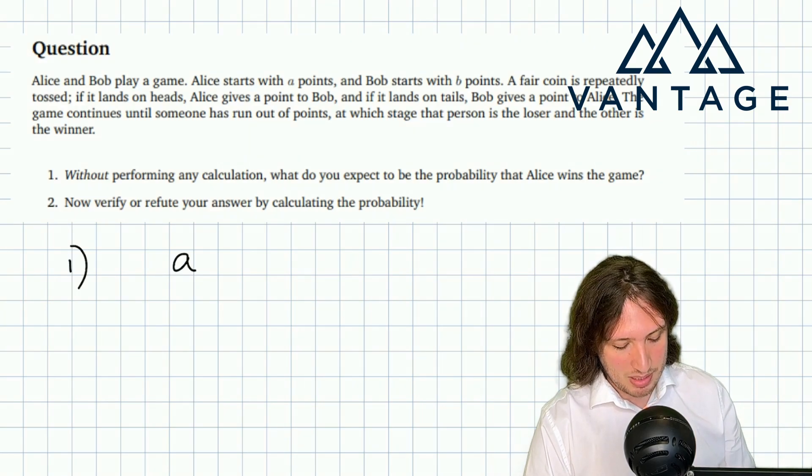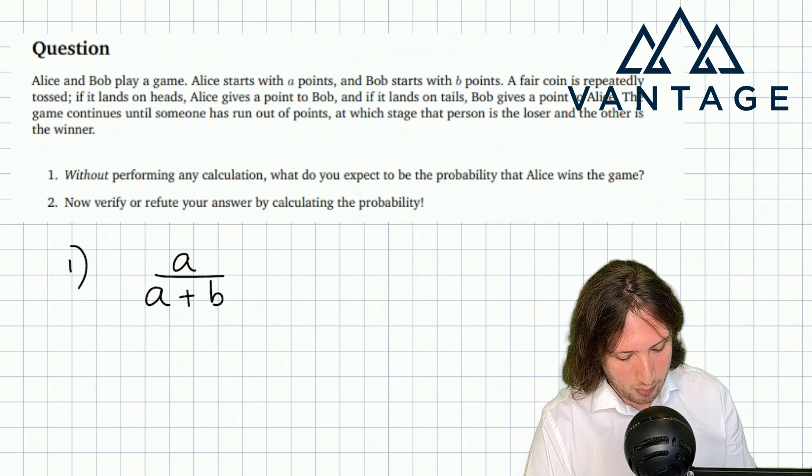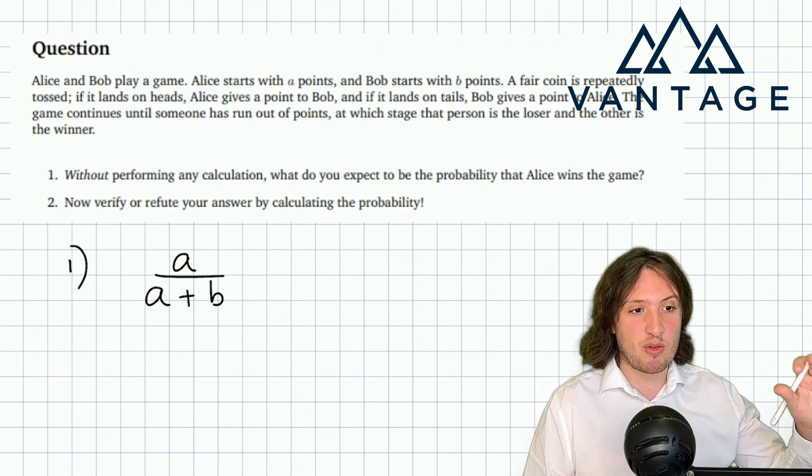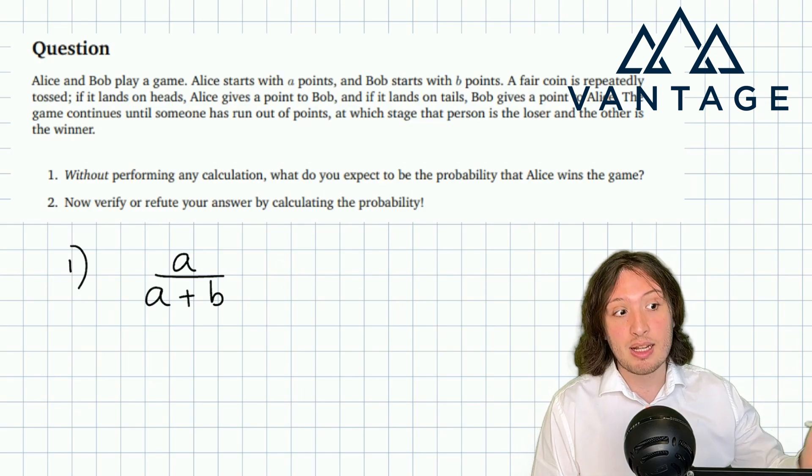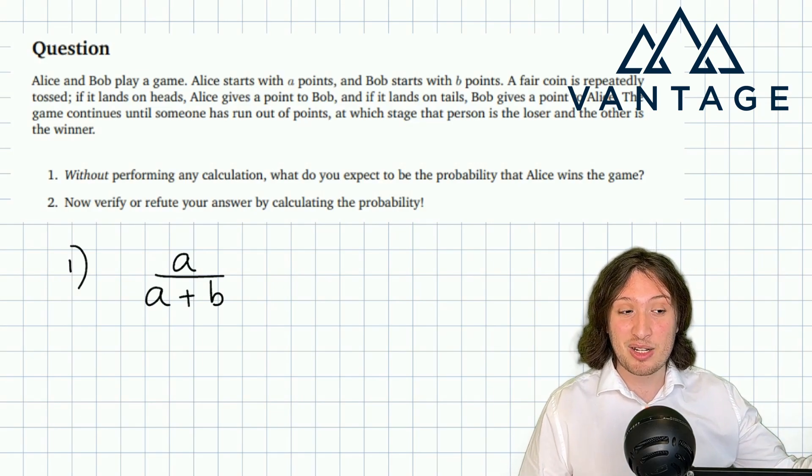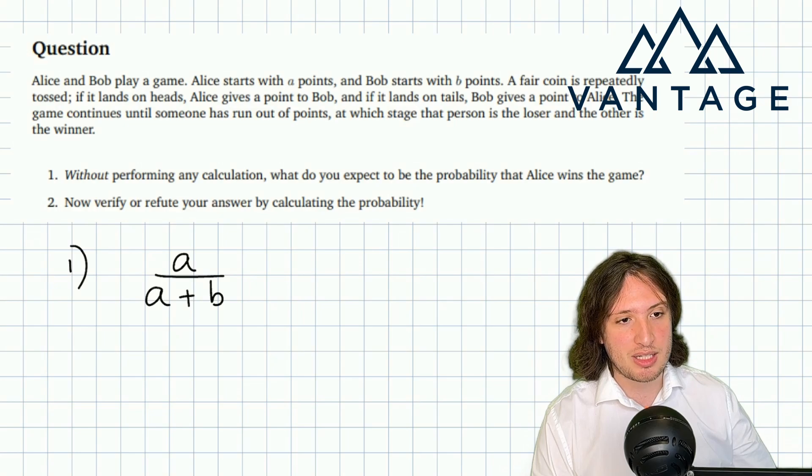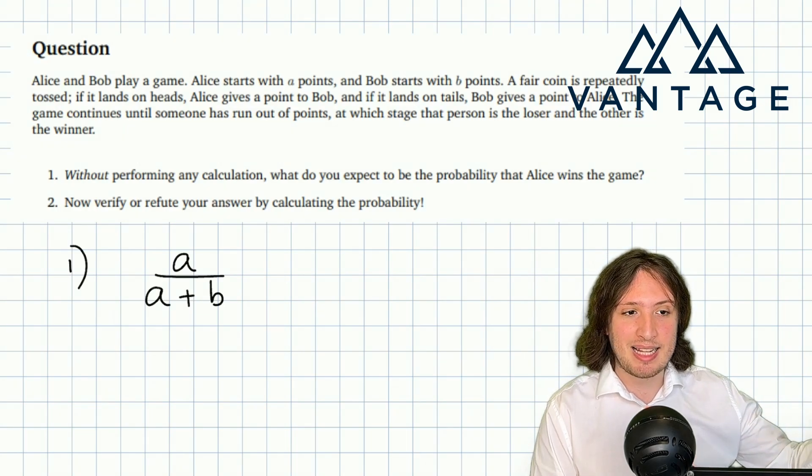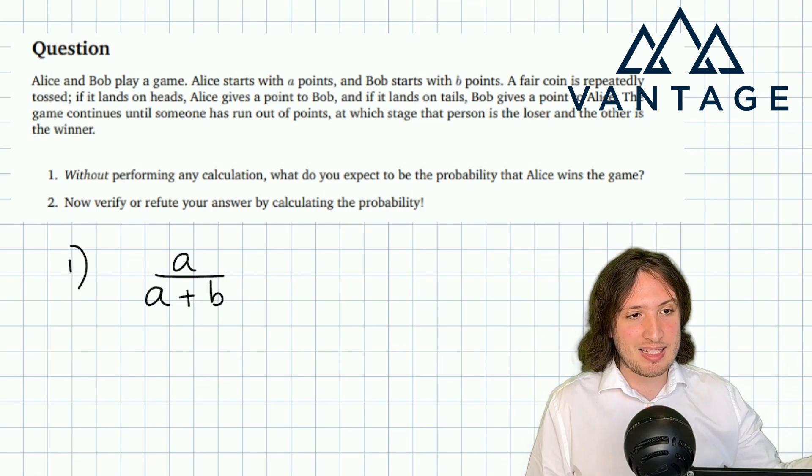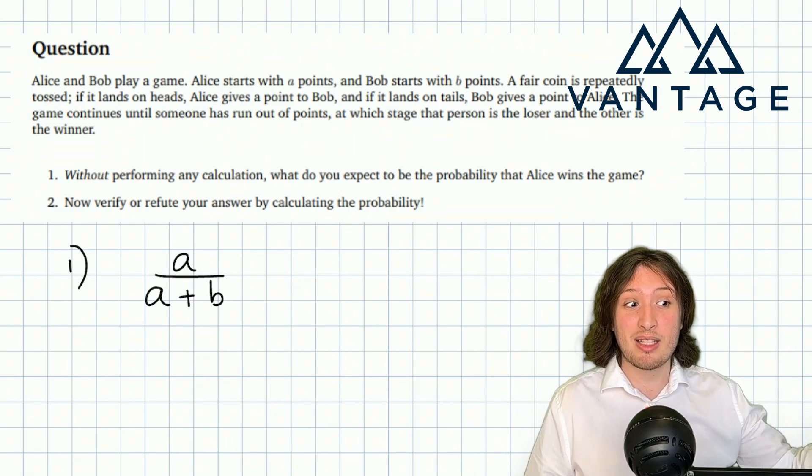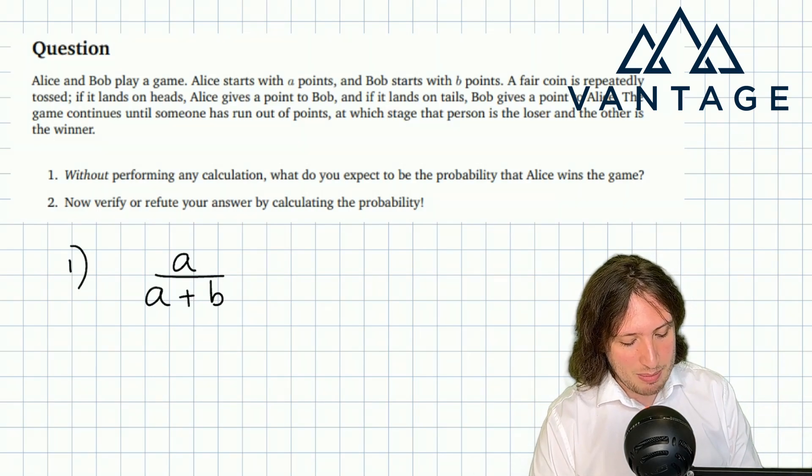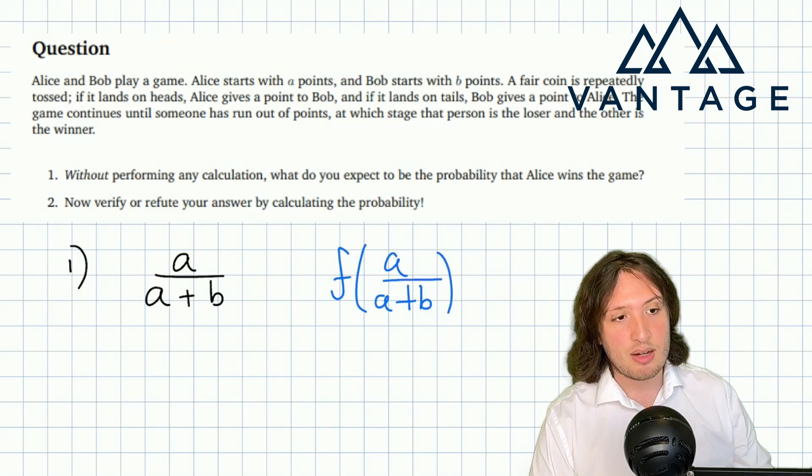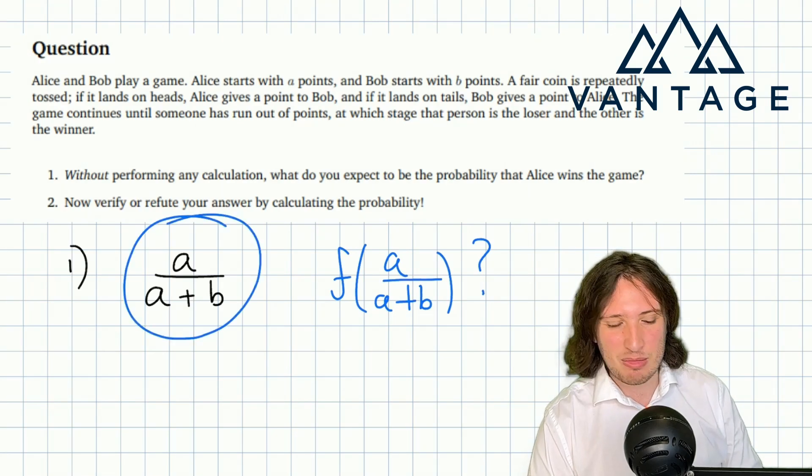I would say the most sensible thing seems to be the proportion of the overall points that Alice has at the start. It has to be something like a ratio or proportion of the variables in order that we ensure we actually have something between zero and one and therefore a legitimate probability. Although clearly having more points benefits Alice, it seems that what should matter is the proportion of the points that she starts with. Maybe more generally I might suspect the answer might be a function of that proportion rather than outright that proportion, but it seems very likely that that proportion is going to have a role.